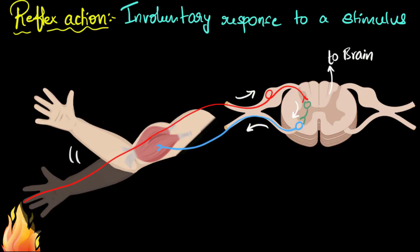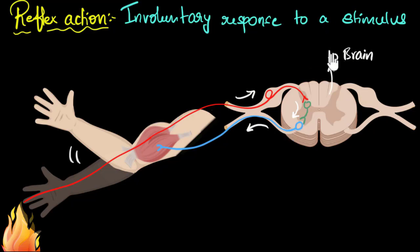The obvious question is: why is this happening? Why are we not waiting for the brain to process the information and then give the command? Well, if we had to wait for the brain to think about it and then decide what to do, in that time the damage would have already been done. Because this is a dangerous situation for our survival, we need immediate action — and in such cases, it does not wait for your brain. That's the speciality of this reflex action. Since reflex actions are super important for our survival, we still have them even though we have a complex brain.